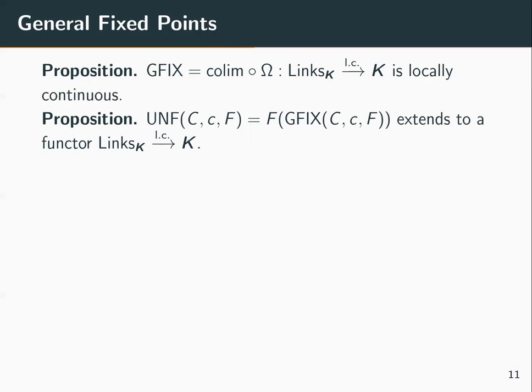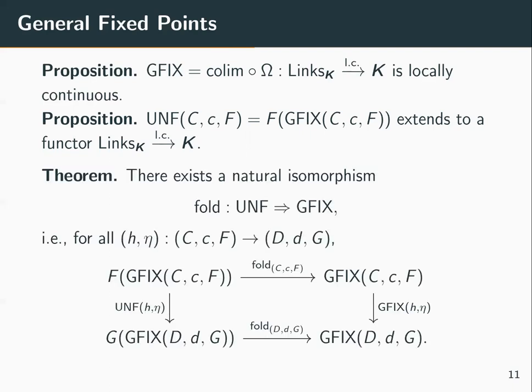To show this gives us fixed points, we define a functor for the unfolding of a fixed point, whose action on objects — the initial link (C, c, F) — is F applied to the generalized fixed point. We can extend this to a locally continuous functor, and we have a natural isomorphism from the unfolding to the generalized fixed point. This result is new to the best of my knowledge.